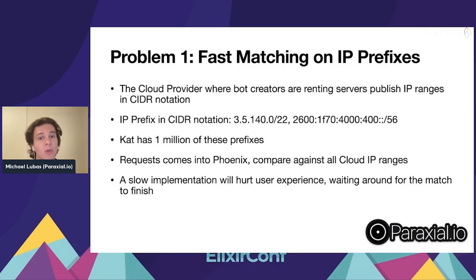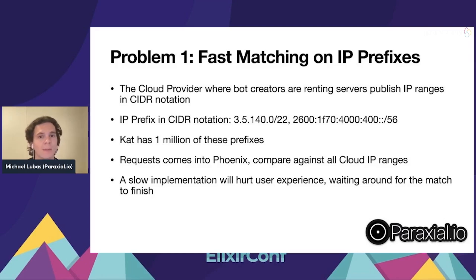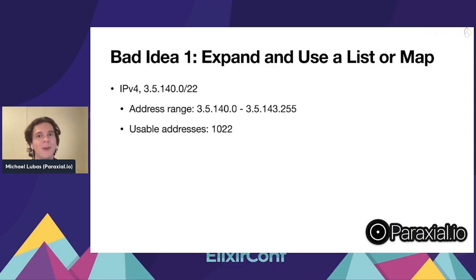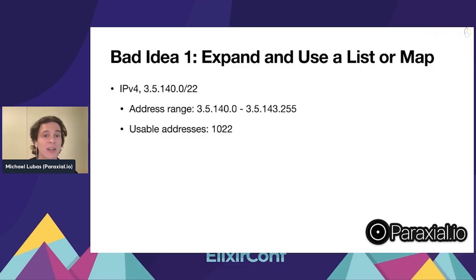Take a moment to think about how you'd approach this problem. One bad idea is to expand all of the prefixes into individual IP addresses in a list, map, or set. With IPv4 and a /22, that's about a thousand IP addresses — maybe manageable. But the problem is IPv6, which is well over a billion IP addresses. You're not going to be able to represent this in memory.